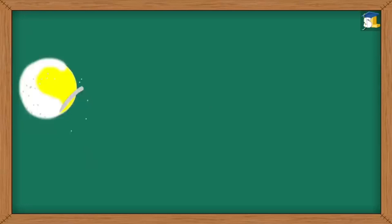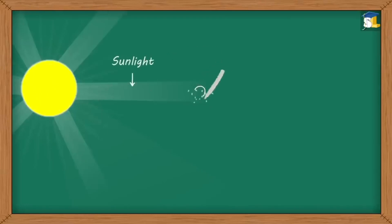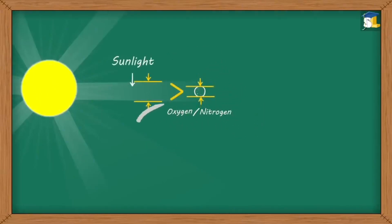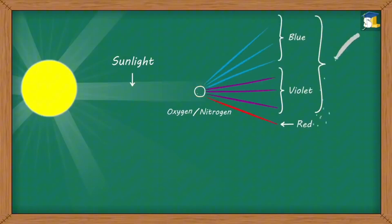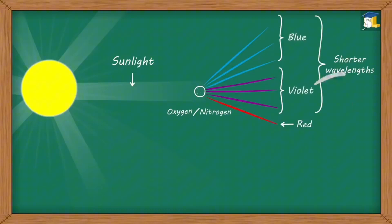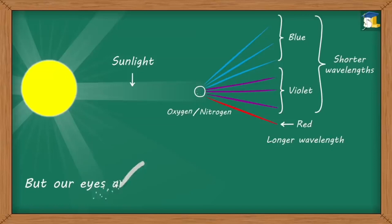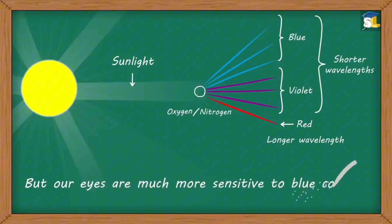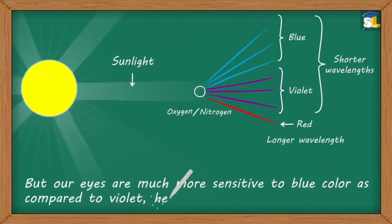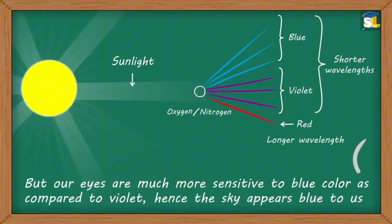However, when the sunlight strikes particles of oxygen and nitrogen, which are smaller than the wavelength of sunlight, the colors of sunlight having shorter wavelengths, that is, blue and violet, are much more scattered than colors having longer wavelengths. But our eyes are much more sensitive to blue color as compared to violet. Hence, the sky appears blue to us.